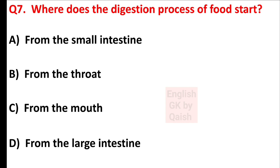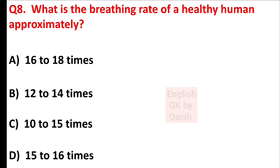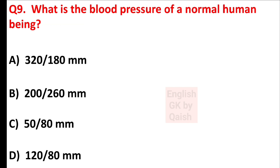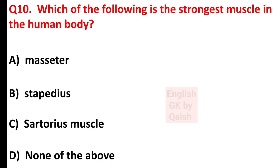Where does the digestion process of food start? Answer is option C — from the mouth. What is the breathing rate of a healthy human approximately? Answer is option A — 16 to 18 times. What is the blood pressure of a normal human being? Answer is option D — 120 by 80 mm. Which is the strongest muscle in the human body? Answer is option A — masseter.